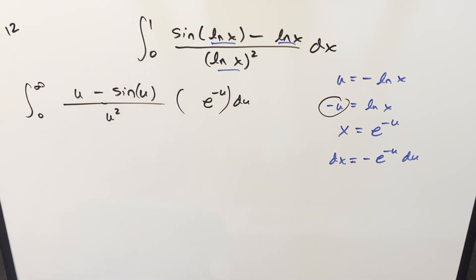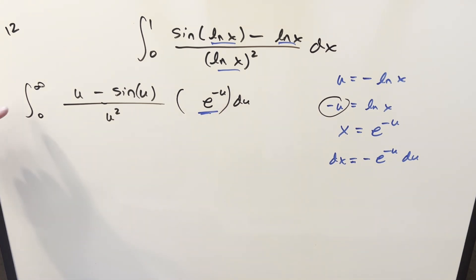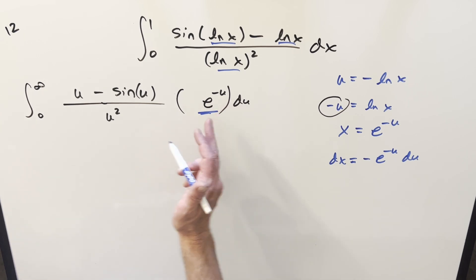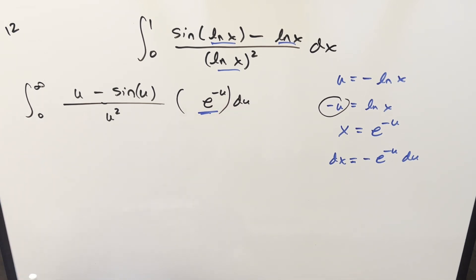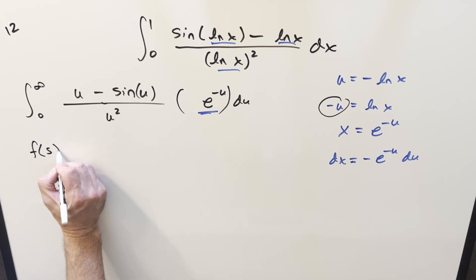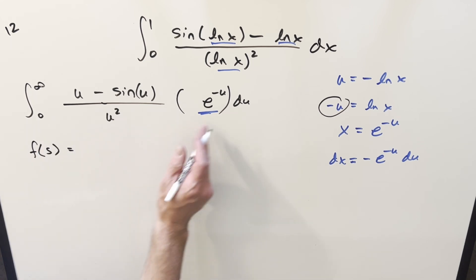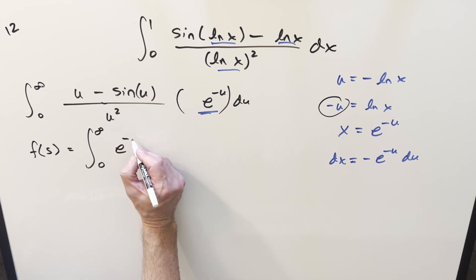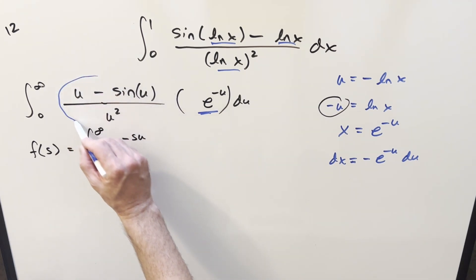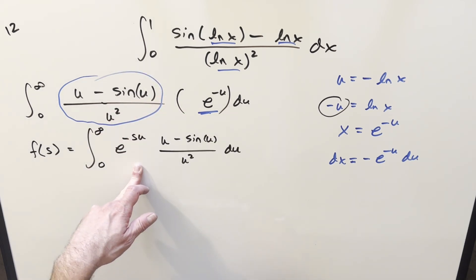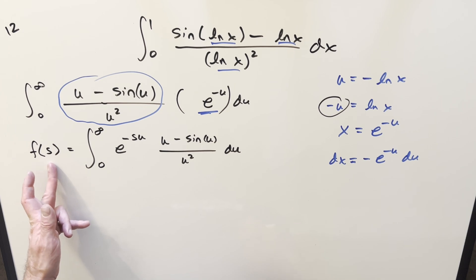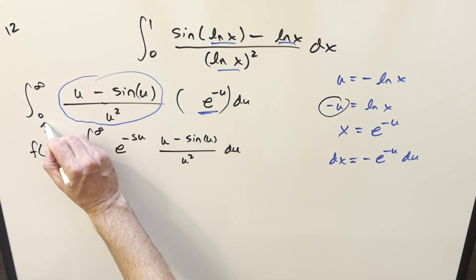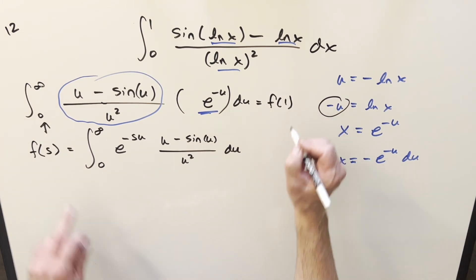With this cleaned-up version of the integral, it's well set up for Feynman's trick because we've got this e^(-u) which we can parameterize — creating a parameter in the exponent. When u goes to infinity, the whole thing goes to 0, so we have convergence. Let's create a parameter s in the exponent, writing e^(-su), and this gives us f(s). Our goal will be f(1), and we know f(∞) = 0 as a boundary condition.